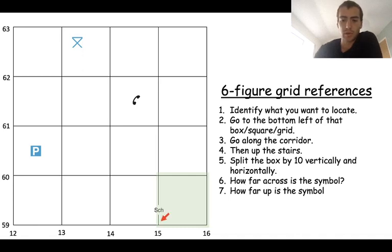We go to the bottom left corner. Step number two, step number three. Along the corridor to 15. Don't really go up the stairs, but we go up the stairs to 59. That's our four-figure grid reference.